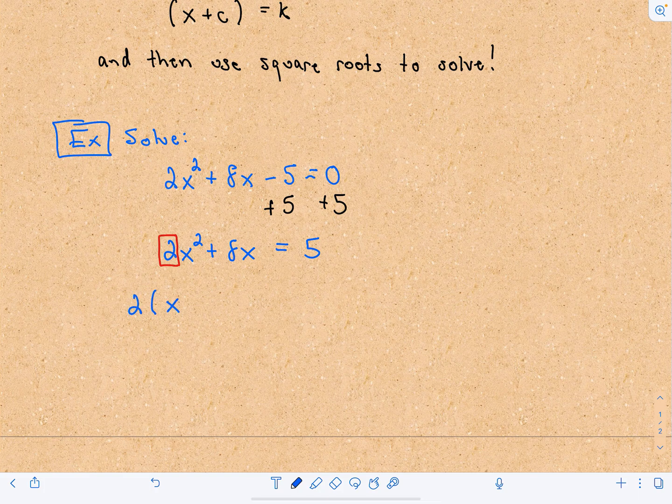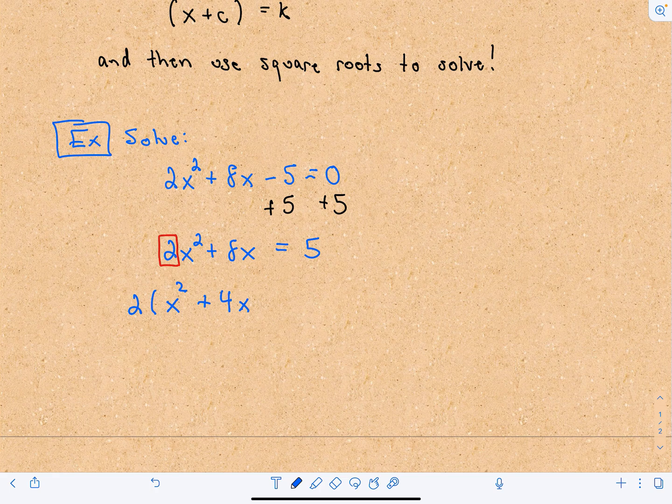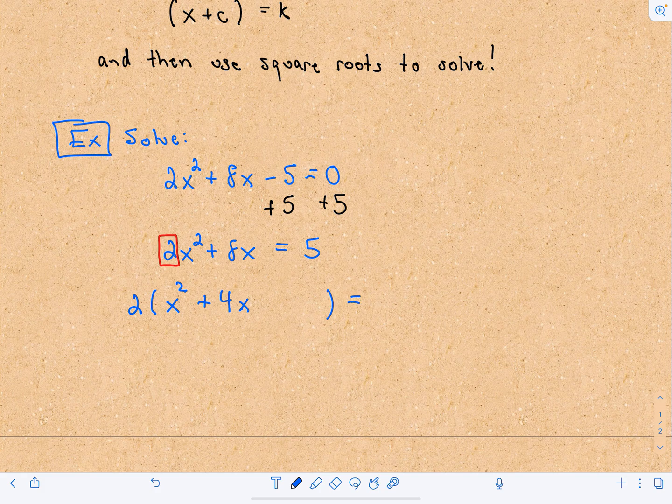I'm going to pull my 2 out. 2 times x² would be 2x², and 2 times 4x would give 8x back. I'll leave myself a little bit of space here, so there's my equals 5.